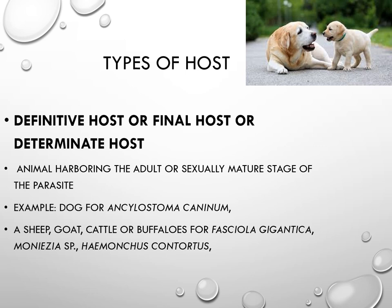Various types of hosts are present on this planet. The first is the definite host, also called the final or determinate host — the animal harboring the adult or sexually mature stage of the parasite. Examples include Ancylostoma caninum, the hookworm of dogs, as well as Fasciola gigantica, Fasciola hepatica, Moniezia expansa, and Haemonchus contortus, whose final hosts include sheep, goats, cattle, or buffalo.